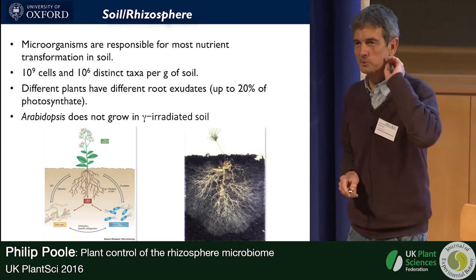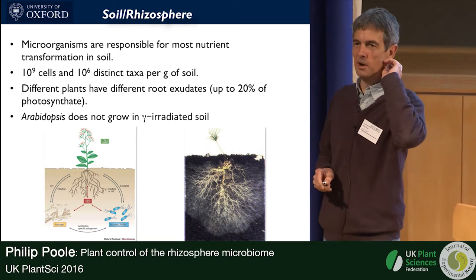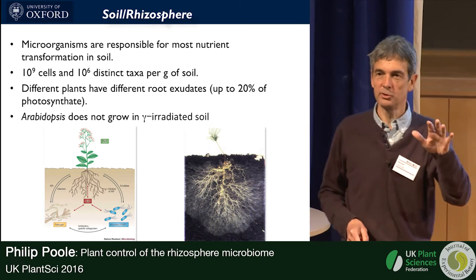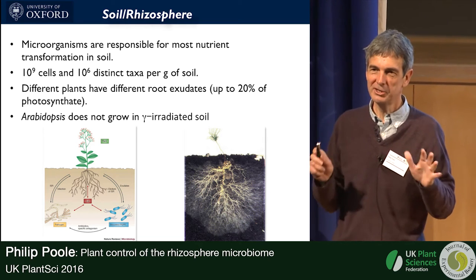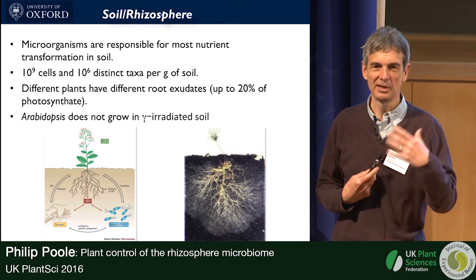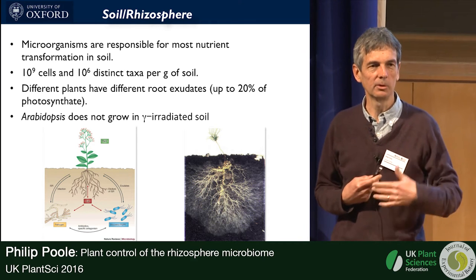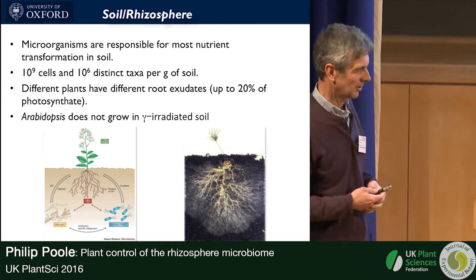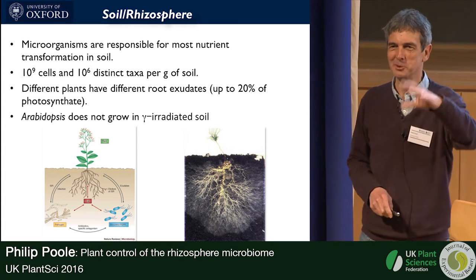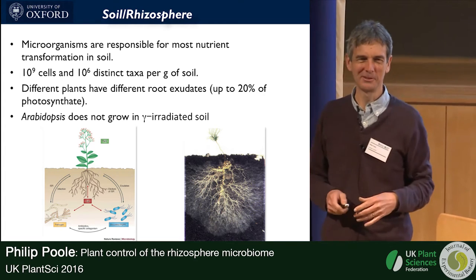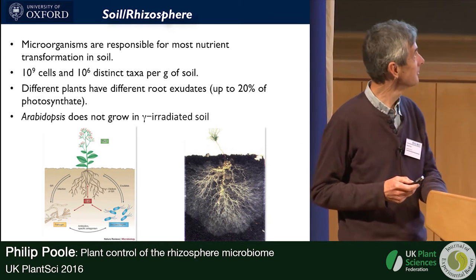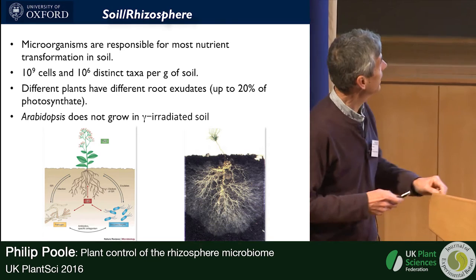For the Arabidopsis people, it's useful to remind them that if you take Arabidopsis and put it into gamma-irradiated soil, it usually doesn't grow. It actually needs microbes to change nutrient status — making nutrients soluble — for Arabidopsis to be able to grow. That's why in the lab you put it on Murashige & Skoog medium with sucrose and all sorts of supplements.